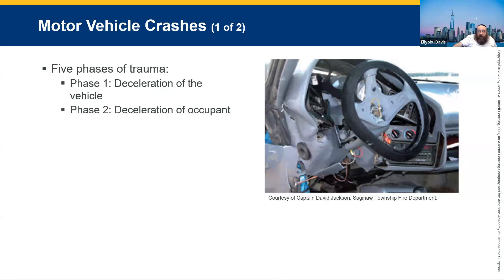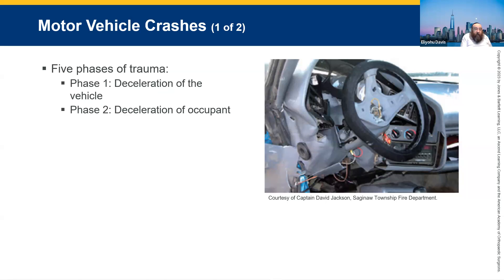There are five phases of trauma. Phase one is deceleration of the vehicle — deceleration can mean they hit the brakes or they decelerated by hitting a lamppost, a stationary car, or a wall. The vehicle will continue to move until all the kinetic energy has been dissipated, changing from kinetic to potential energy.